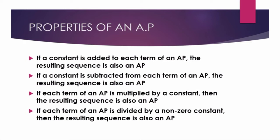Third property: if each term of an AP is multiplied by a constant, then the resulting sequence is also an AP. Fourth property: if each term of an AP is divided by a non-zero constant, then the resulting sequence is also an AP.